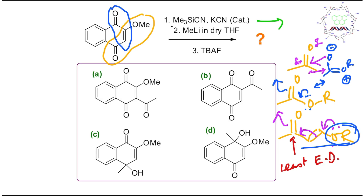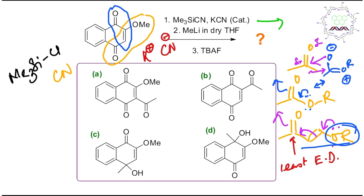Now if you look at the reagent, it is trimethylsilyl cyanide and KCN. Instead of considering TMS-CN directly, you can make your life easier by treating it like a silyl chloride, because cyanide is considered a pseudo-halogen due to its similar properties. KCN is needed only in catalytic amount because cyanide is regenerated during the reaction. KCN dissociates into K⁺ and CN⁻, and cyanide is actually a good nucleophile. From this discussion, we conclude that the carbonyl carbon here is more electron deficient or electrophilic.